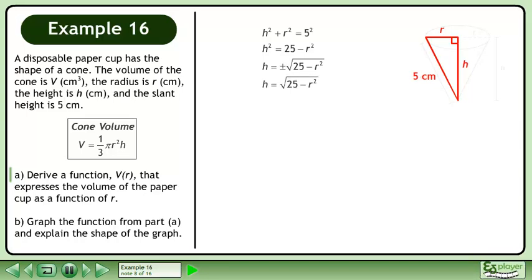We can't have negative heights so reject the negative case. Now write the volume formula. Replace h with the square root of 25 minus r squared. The volume formula now has only one variable, r.